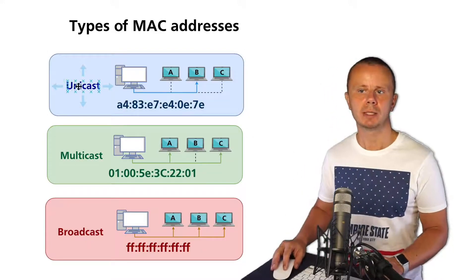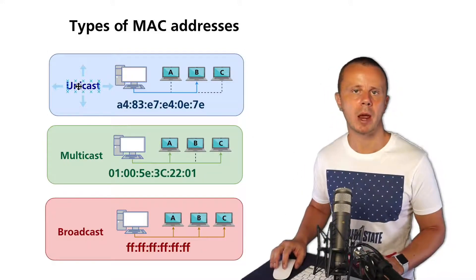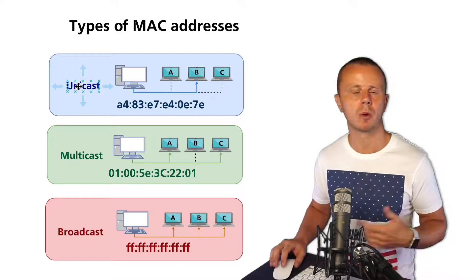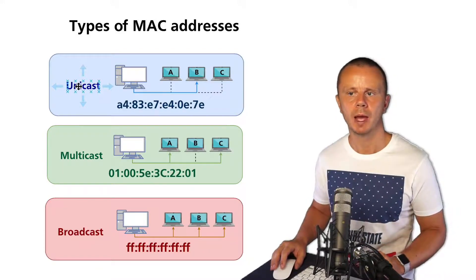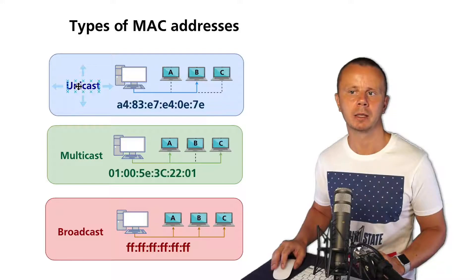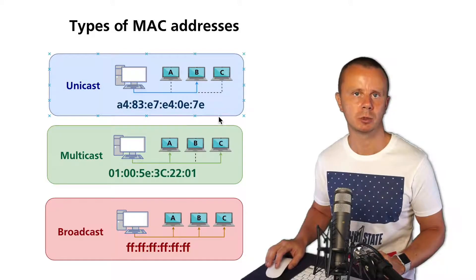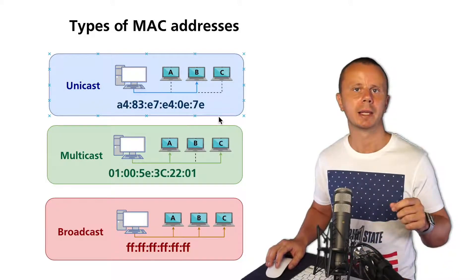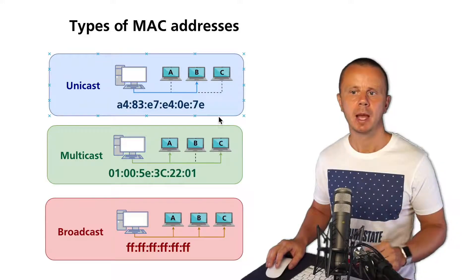All right, let's quickly summarize. Unicast MAC addresses are used by regular devices like mobile phones, computers, laptops, and so on. They are assigned by the manufacturer and consist of two different parts - you'll recall that: OUI and NIC specific part.